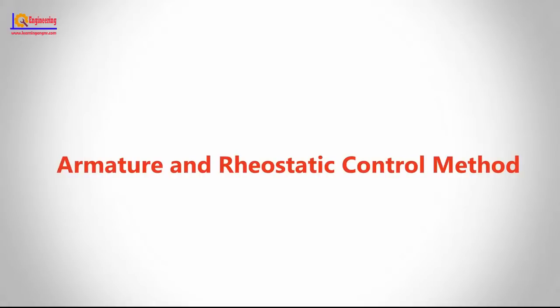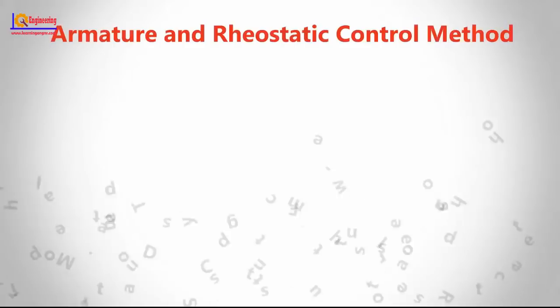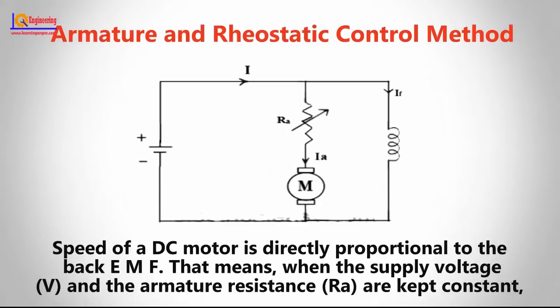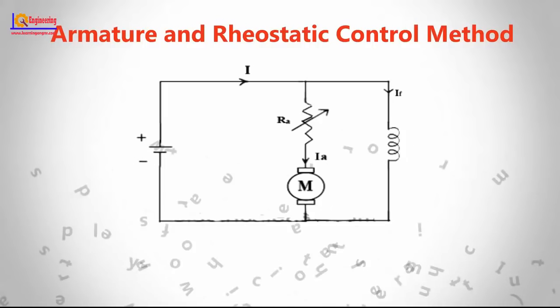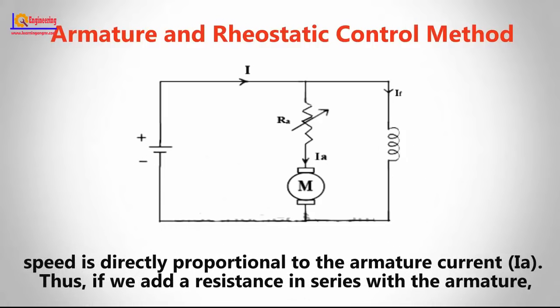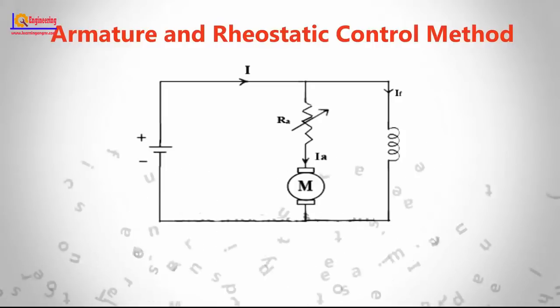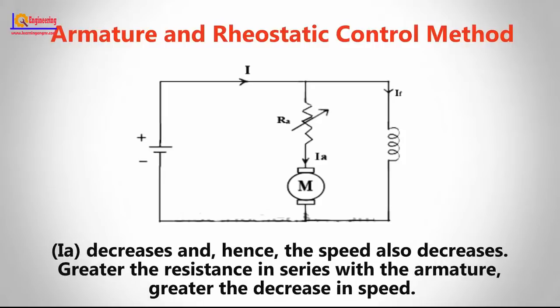In the armature and rheostatic control method, speed of a DC motor is directly proportional to the back EMF. That means when the supply voltage V and the armature resistance RA are kept constant, speed is directly proportional to the armature current IA. Thus, if we add a resistance in series with the armature, IA decreases and hence the speed also decreases.